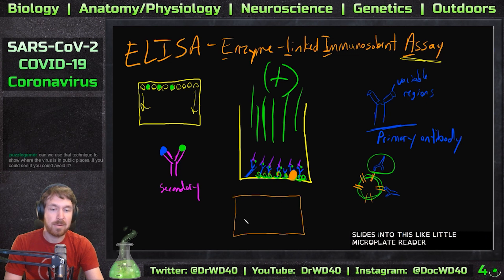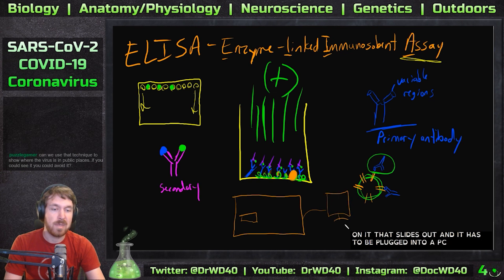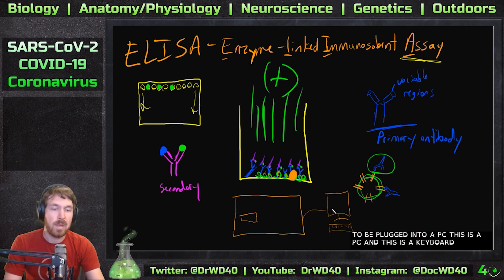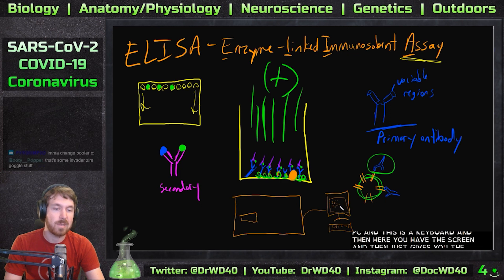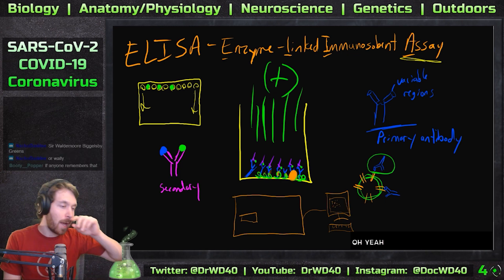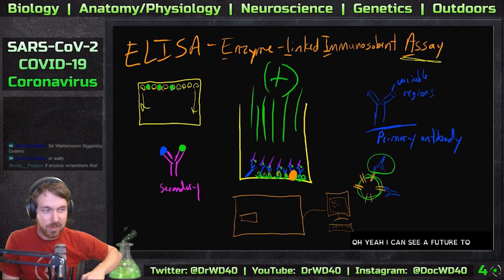This requires putting it into a machine — this 96-well plate slides into a microplate reader. There's a little door that slides out and it has to be plugged into a PC with a keyboard and screen. The machine gives you positive and negative readings that you then analyze.